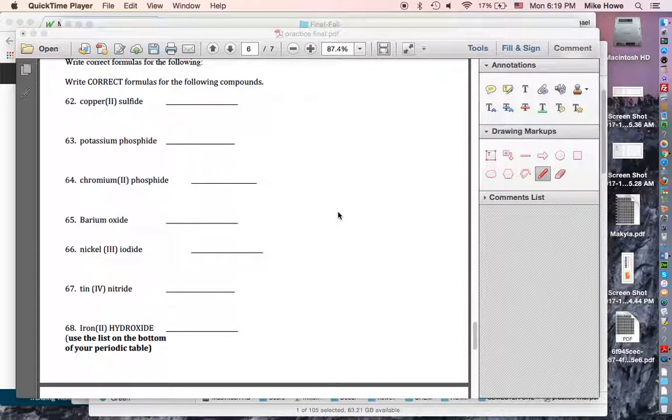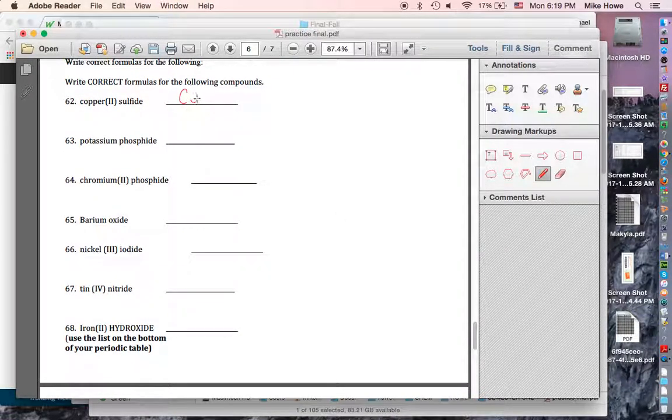Copper(II) sulfide. You know that copper is Cu. You're going to need a periodic table for this, and copper is +2. Sulfur has 6 valence electrons, so it's going to have a -2 charge. So with +2, -2, they're already equal and opposite, so you don't need to do anything else.